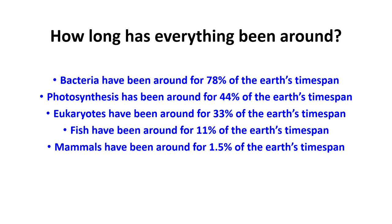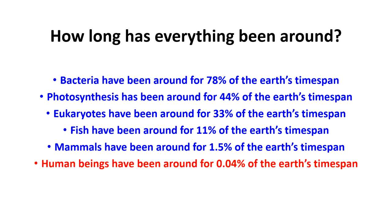Mammals, as we understand the whole group, have been around for just over 1% of the Earth's time span. Human beings, a type of mammal, have been around for just 0.04% of the Earth's time span — essentially a flash at the end of the time span on bacteria planet.